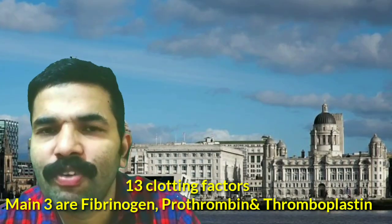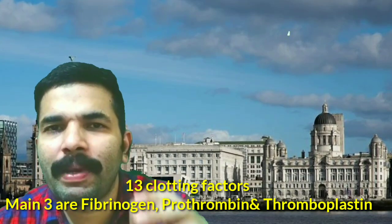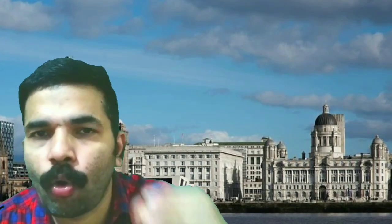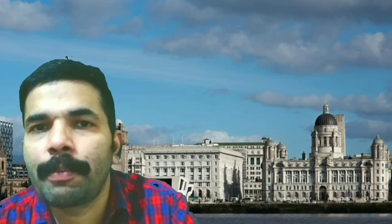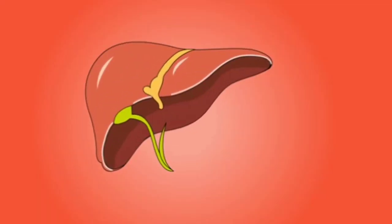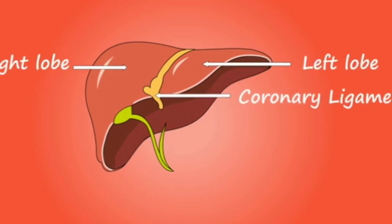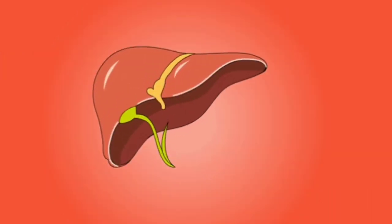So to summarize the key points: liver is the largest gland and second largest organ, weighing 1.5 kg. It receives 25% of cardiac output. There are two lobes — right lobe and left lobe. It is situated in the right upper quadrant, under the diaphragm. The three main functions are clotting factor production, glycogen storage, and bile synthesis.